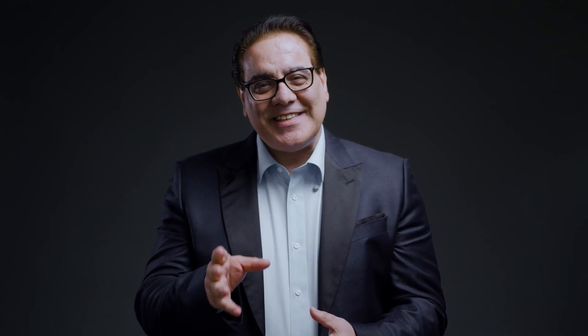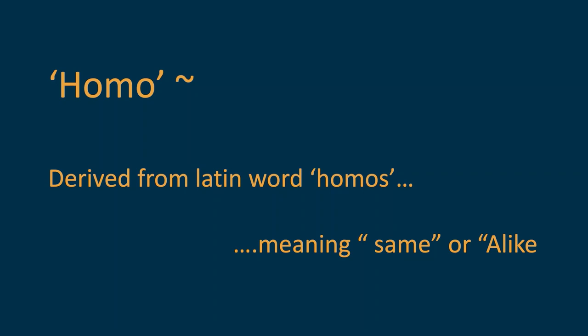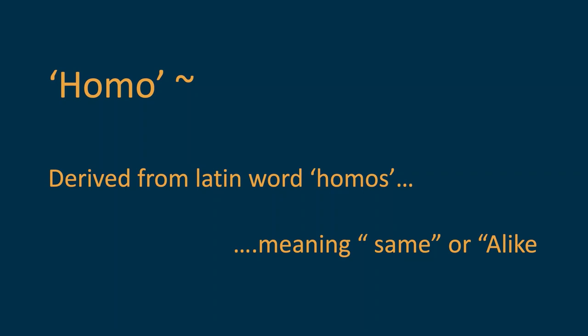To get an understanding of what homogeneous environments are, let's break down the word homogeneous. The prefix 'homo' is derived from the Latin word homos, meaning same or alike. And the root word 'geneous' comes from the Latin word ginos, meaning a kind or a type.